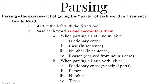Quick review of parsing. Parsing is the exercise or act of giving the parts of each word in a sentence. We start at the left, the first word, and parse or read each word as one encounters them, moving towards the right. By parse, I mean give the parts. When you encounter a Latin noun, you give that noun's dictionary entry, the case of that noun in the sentence, the number, and from the case we derive the noun's reason, and then we can come up with a translation into English. When parsing a Latin verb, give the dictionary entry, the principal parts, and then the person, number, and tense of the verb.